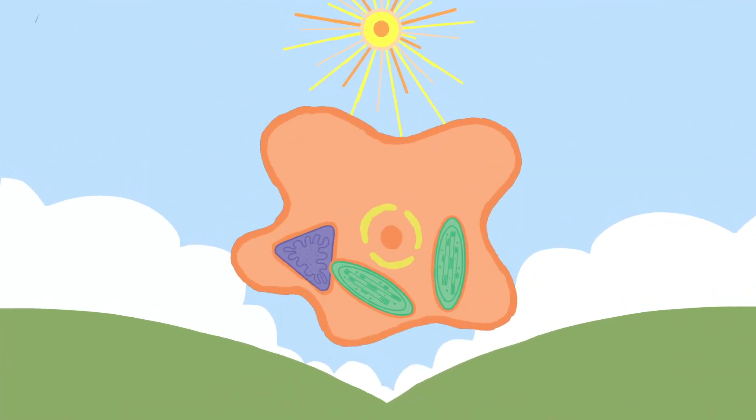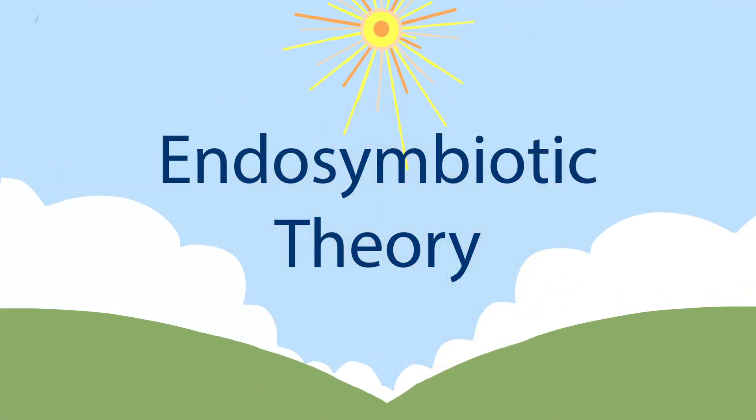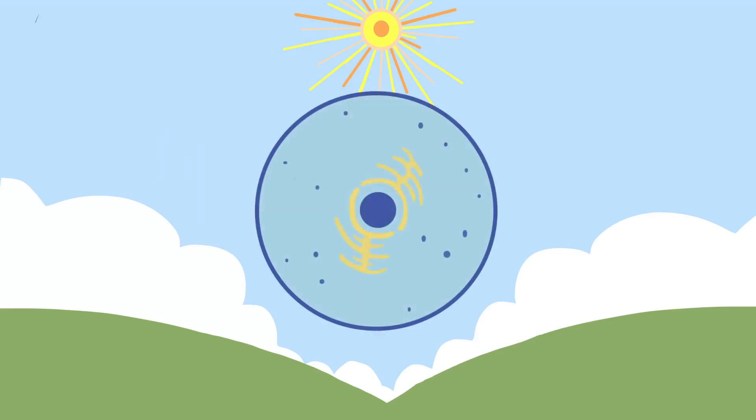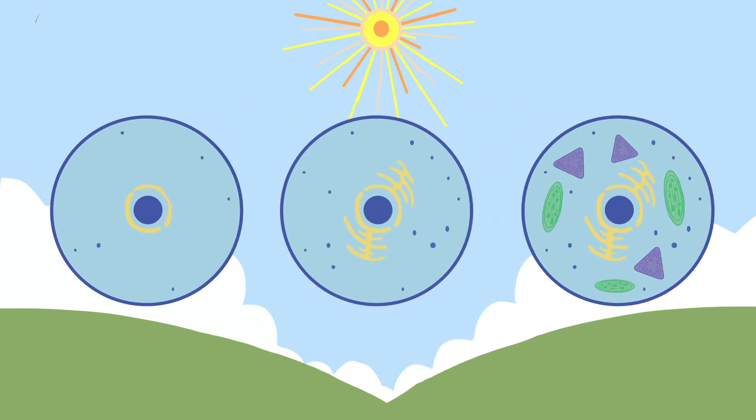This little story highlights what biologists call the endosymbiotic theory, the current best explanation of how complex cells evolved. There's a lot of evidence that supports this theory, but let's look at three main pieces.